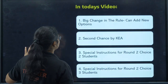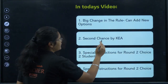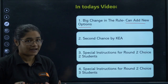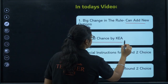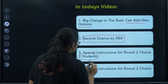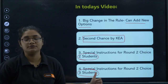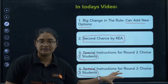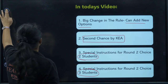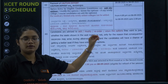The first big rule that has come is: you can add new colleges and new options in your option entry. KEA is giving a second chance, which I will talk about in detail. I'll also show you the special instructions for Choice 2 students and Choice 3 students — I'll be making separate videos for these as well, but here we will discuss them in brief.